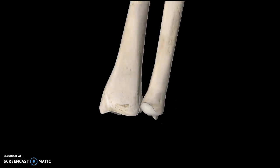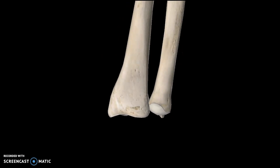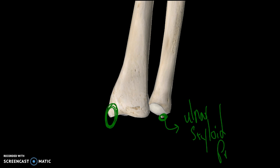There is one last structure to talk about, which is the styloid process. If you recall, the pointy structure on the radius was the radial styloid process. This pointy structure here is the ulnar styloid process. You can actually touch it — if you go down your hand, there's a little bump, and that's the ulnar styloid process.